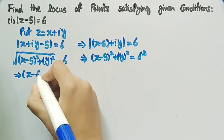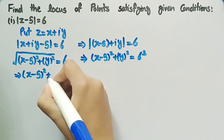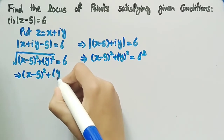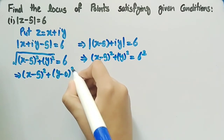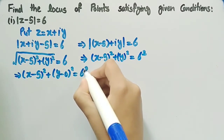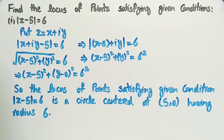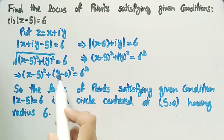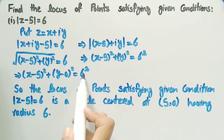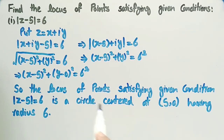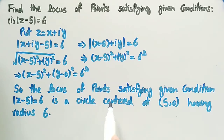We can also write it as x minus 5 whole square plus y minus 0 whole square equal to 6 squared. We know that this is the equation of a circle having center (5, 0) and radius 6. So the locus of points satisfying the given condition mod of z minus 5 equal to 6 is a circle centered at (5, 0) having radius 6.